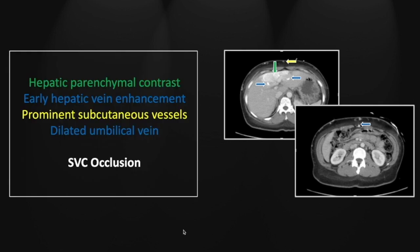So this is a case of superior vena cava occlusion with rerouting of venous blood through the umbilical vein and hepatic parenchyma. When you see this finding in the liver, the first thing to request is a CT of the chest.